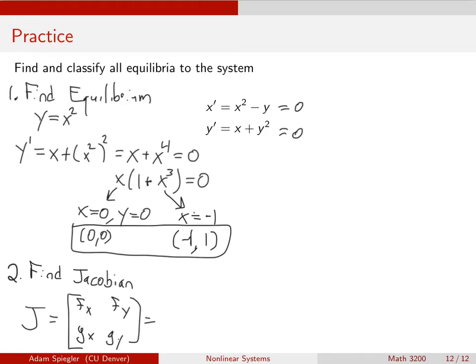Recall that f is denoting the equation for x prime. So this equation over here is f. I would take the partial of that with respect to x, and that gives me 2x. I would take the derivative of that with respect to y, and it gives me minus 1. Then I look at the equation for y prime. I take the derivative of that with respect to x, and it gives me 1. And then I take the derivative of that with respect to y, and it gives me 2y.